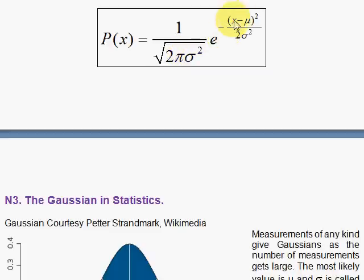Here, mu is our average, which in the dart case we took to be zero, but in general it can be some non-zero value. That's your mean, that's your average. And sigma squared is your variance — it's a measure of the spread. The square root of sigma squared is simply sigma, and that's your standard deviation.